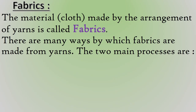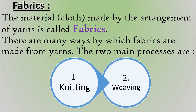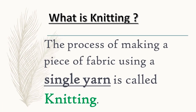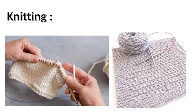The two main processes by which fabrics are made from yarn are: number 1 — Knitting, and number 2 — Weaving. Knitting is the process of making a piece of fabric using a single yarn. As shown in the picture, knitting is done with the help of knitting needles.